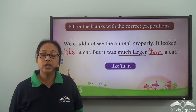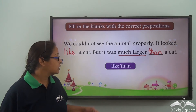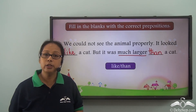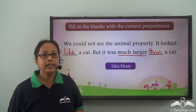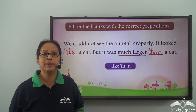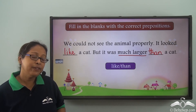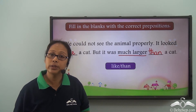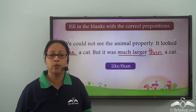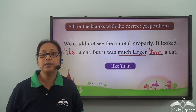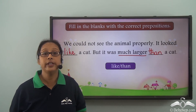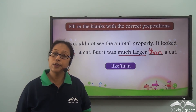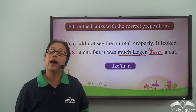Today we have learned two new prepositions: 'like' and 'than.' When we talk about 'like,' we are comparing two things or two people where something is similar between them. When we use 'than,' we are still comparing two people or two things, but we are talking about the difference. There are more prepositions which we are going to learn very soon. You can use 'like' and 'than' in sentences of your own to see if you've understood the difference.